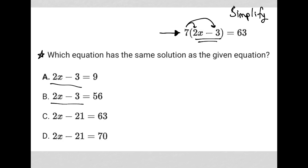Again, I notice that the first two answers have 2x minus 3, and I have 2x minus 3 already inside parentheses. So I'm actually going to simplify not by distributing the 7, but by dividing by 7.